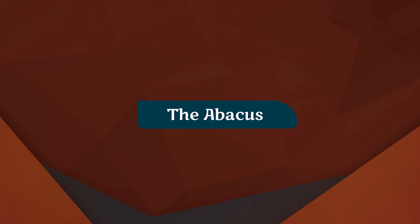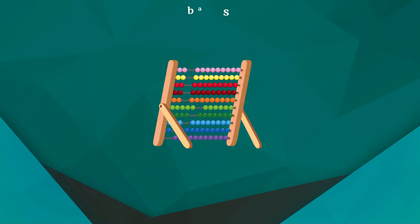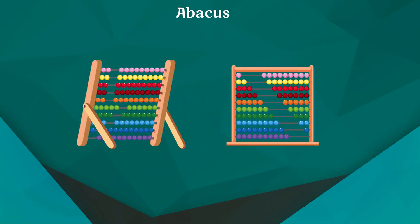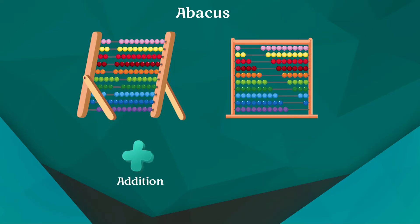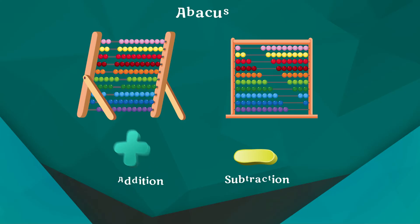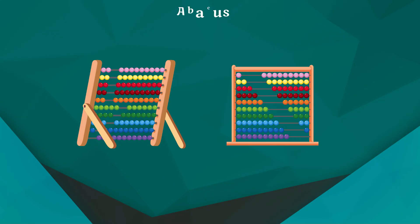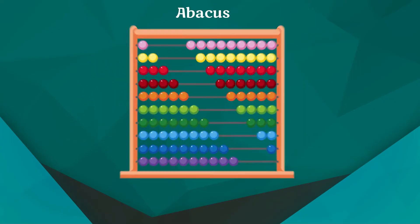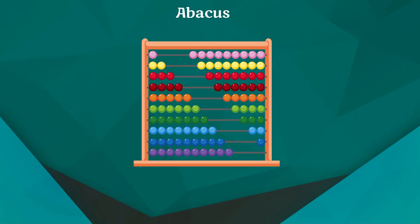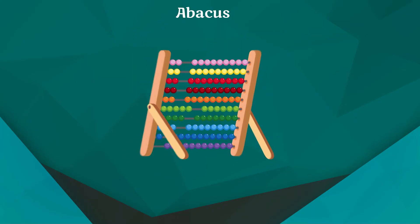The Abacus is known to be the first mechanical calculating device, which was used to perform addition and subtraction easily and speedily. This device was developed by the Chinese and has been in use since 500 BC. Abacus is made up of a wooden frame in which rods were fitted across with round beads sliding on the rods. It is divided into two parts called heaven and earth — heaven was the upper part and earth was the lower one. Any number can be represented by placing the beads at the proper place.